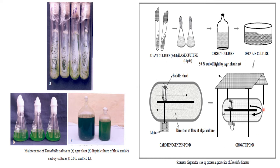The growth pond is covered by an agri-shade net that cuts off about 50% of light. Dunaliella is grown primarily for beta-carotene production, which is a pigment produced under stress conditions. Light acts as one stress inducer. When 50% of light is cut off, it promotes growth and mass multiplication, because under full stress the cells enter a resting state and start producing beta-carotene instead of actively growing.